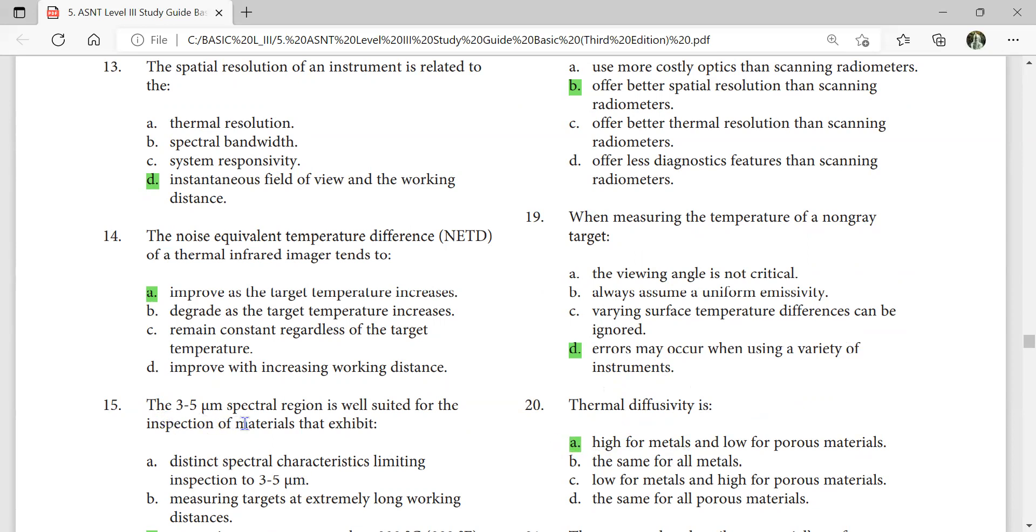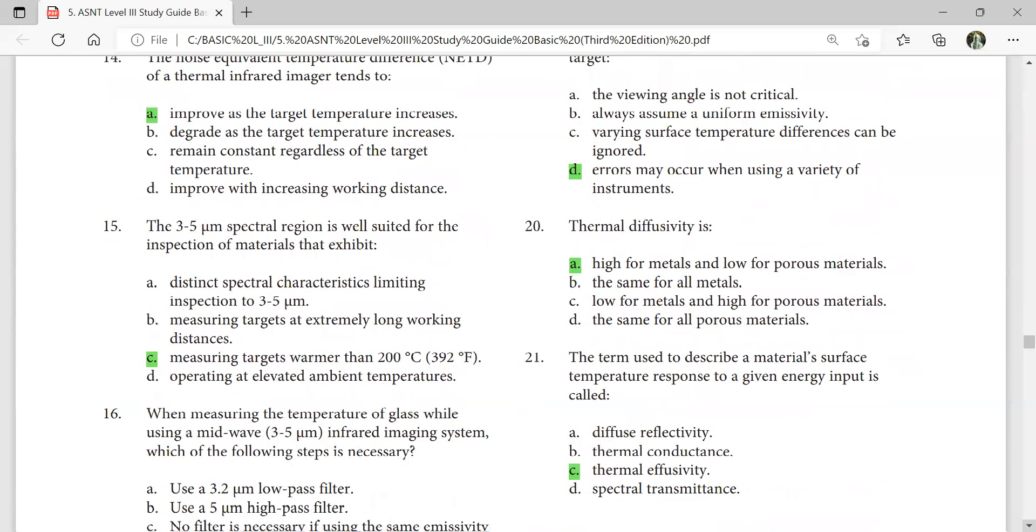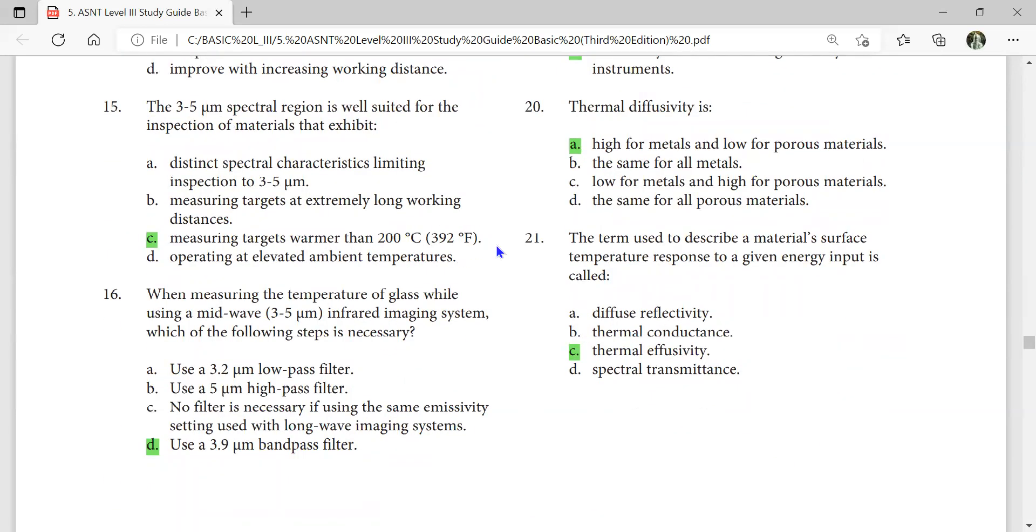The 3 to 5 micrometer spectral region is well suited for the inspection of materials that exhibit measuring targets far more than 200 degrees centigrade. When measuring temperature of glass while using mid-wave 3 to 5 micrometer infrared imaging system, each of the following steps is necessary: use 3.9 micrometer bandpass filter. The term used to describe material surface temperature response to a given energy input is called thermal effusivity.